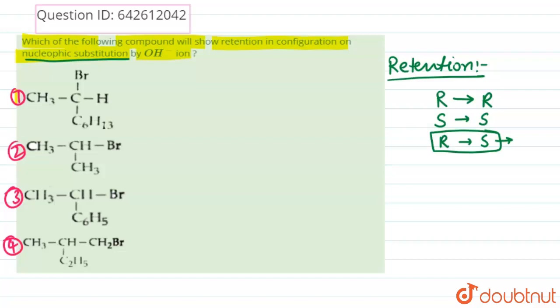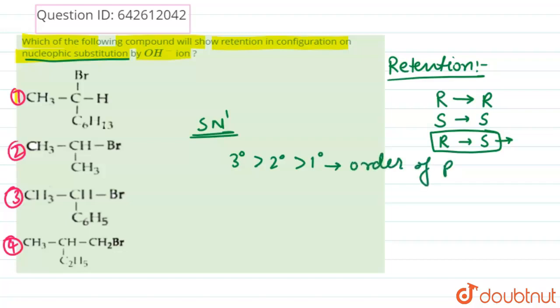If the configuration changes from R to S, or from S to R, then we say inversion takes place. Now if we look at the SN1 order for alkyl halides, it is: 3° > 2° > 1°. This is the order of reactivity in SN1 reactions.